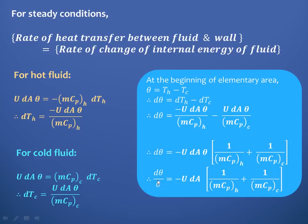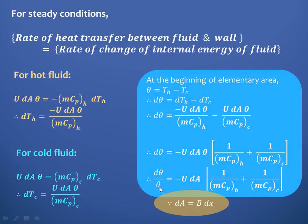Separating variables gives dθ/θ = −U·dA · [1/(mCp)_h + 1/(mCp)_c]. The elementary area dA can be written as p·dx, where p is the width (perimeter) and dx is the small length element. Substituting dA = p·dx and applying the boundary conditions — θ = θ₁ at x = 0 and θ = θ₂ at x = L — we can now integrate both sides.